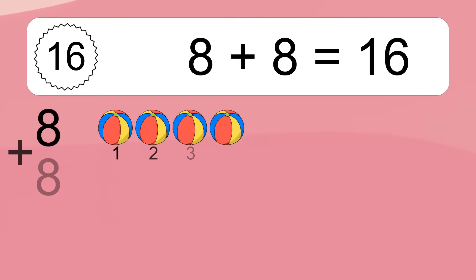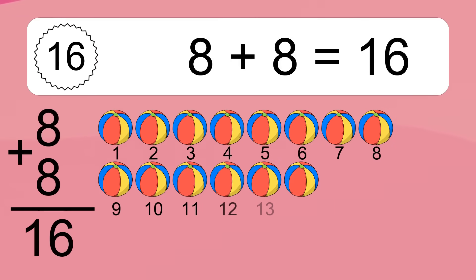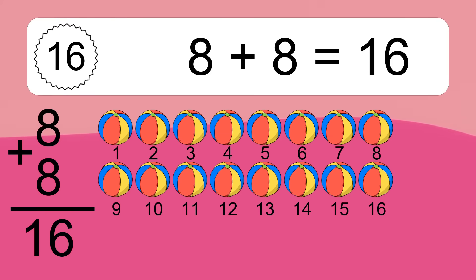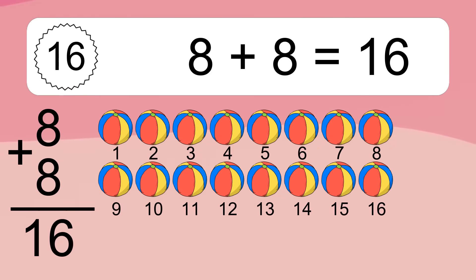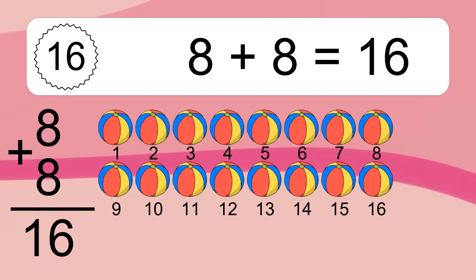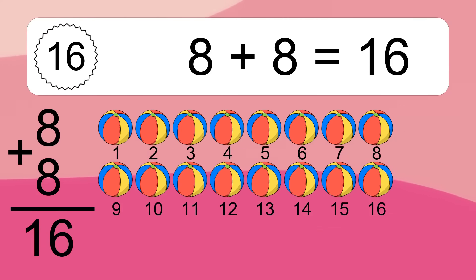8 plus 8 equals what? 8 plus 8 equals 16. Let's count it: 1, 2, 3, 4, 5, 6, 7, 8, 9, 10, 11, 12, 13, 14, 15, 16.